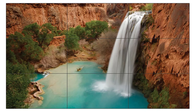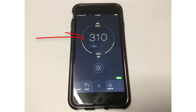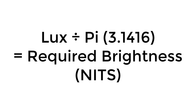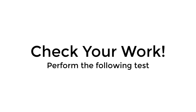Next, we'll calculate the required value for an LCD or an LED display. You take the lux value from your light meter app and divide by pi, which is 3.1416, to get the value in nits. This is the lowest acceptable brightness output from an LCD or LED display that you might select for this space.